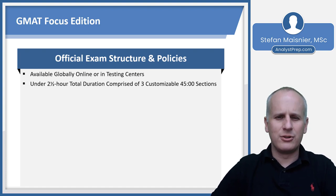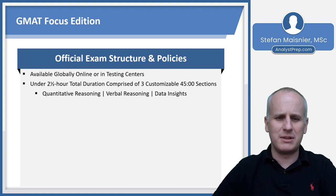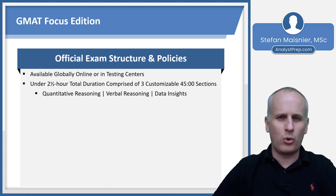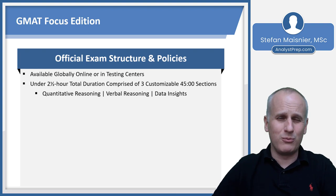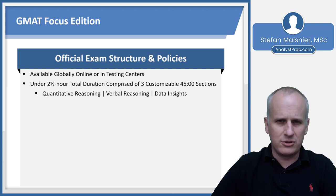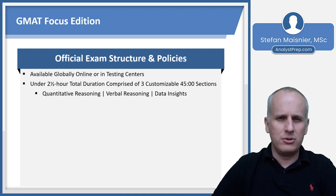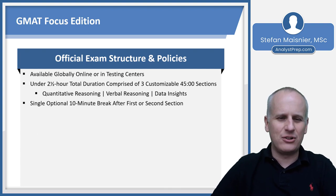You're going to have three customizably ordered 45-minute sections: the Quantitative Reasoning section, the Verbal Reasoning section, and the Data Insight section. These can be ordered however you like, and you'll have an option to arrange them to your preference. The order in which you take the sections will be relatively unimportant in terms of your score, but you want to make sure you're going with whatever order you've been using in your practice.